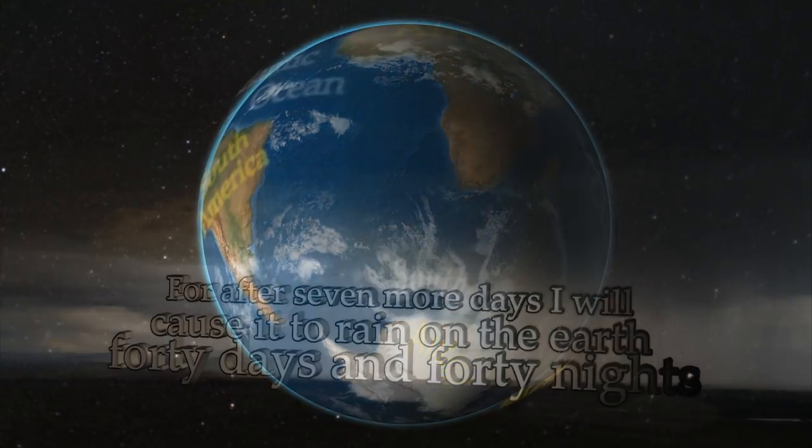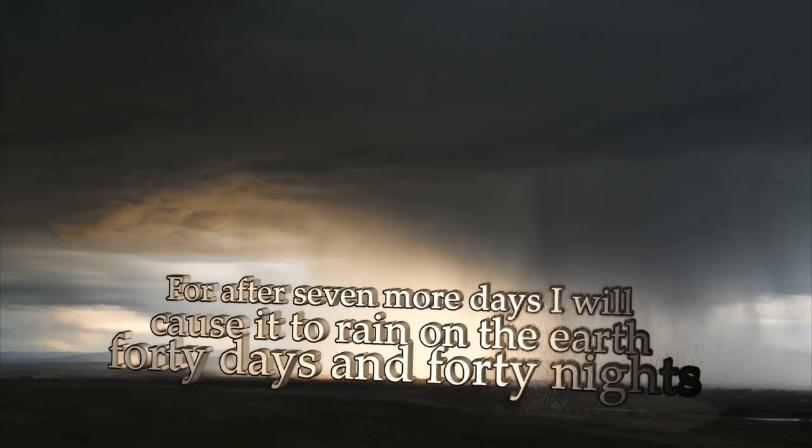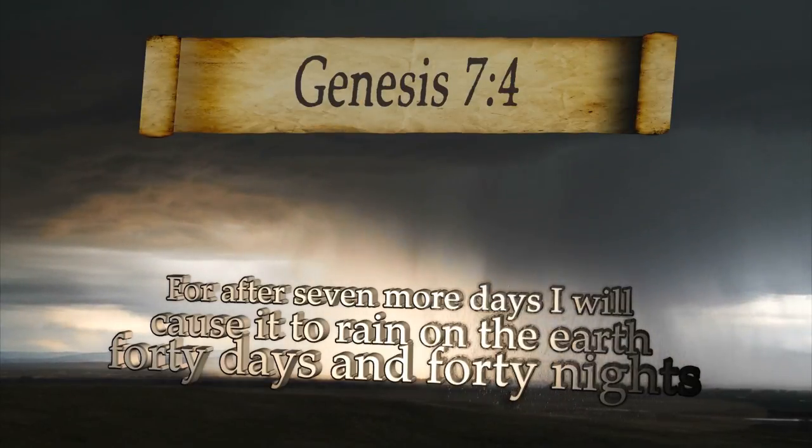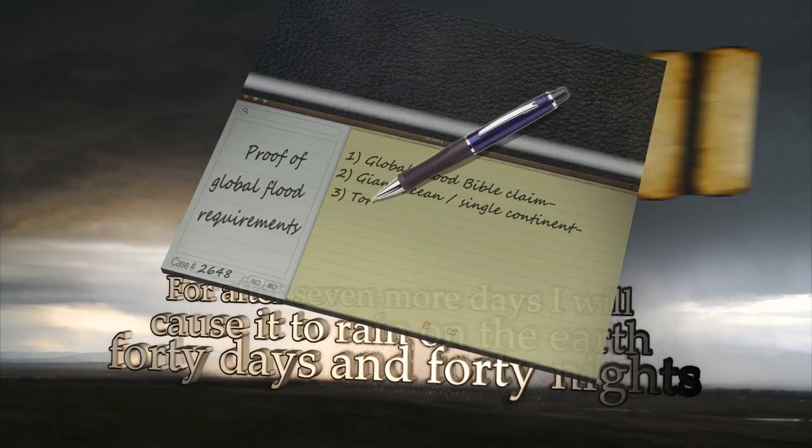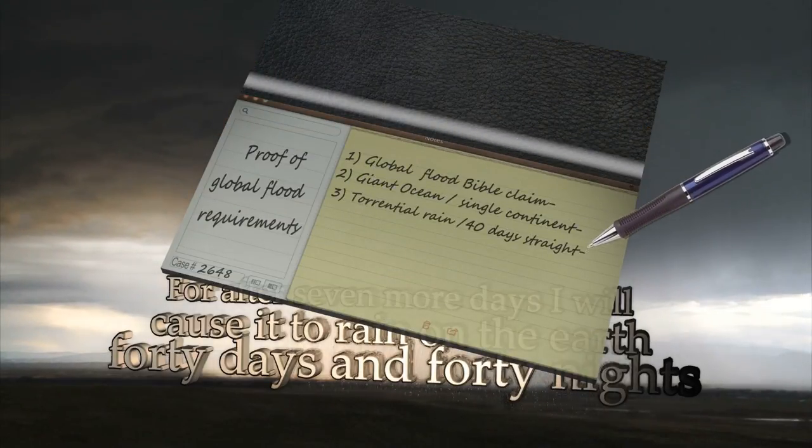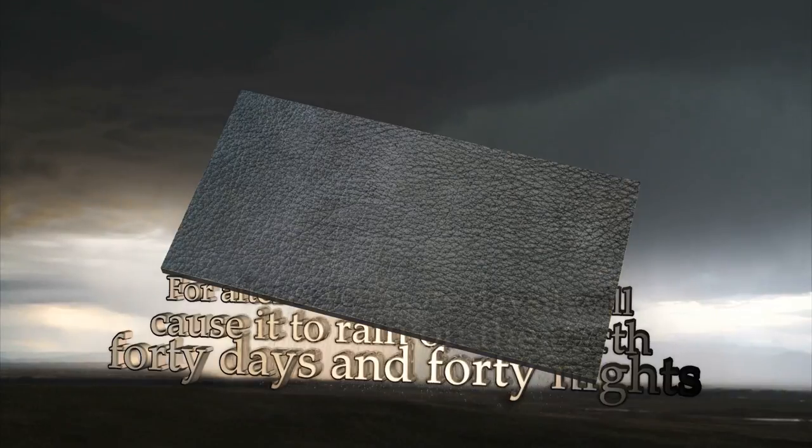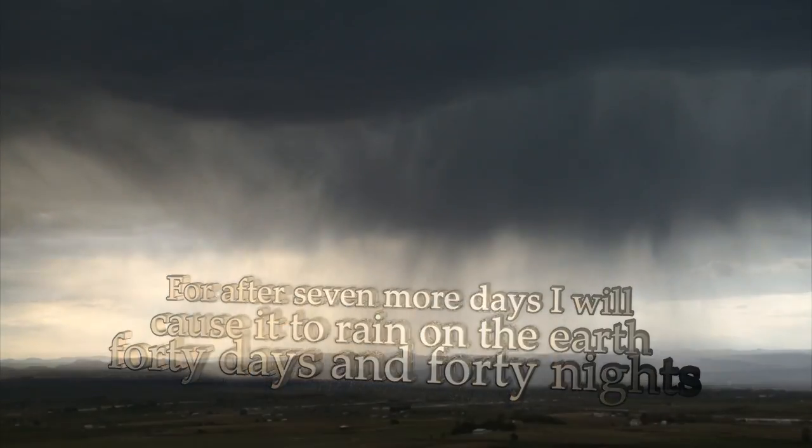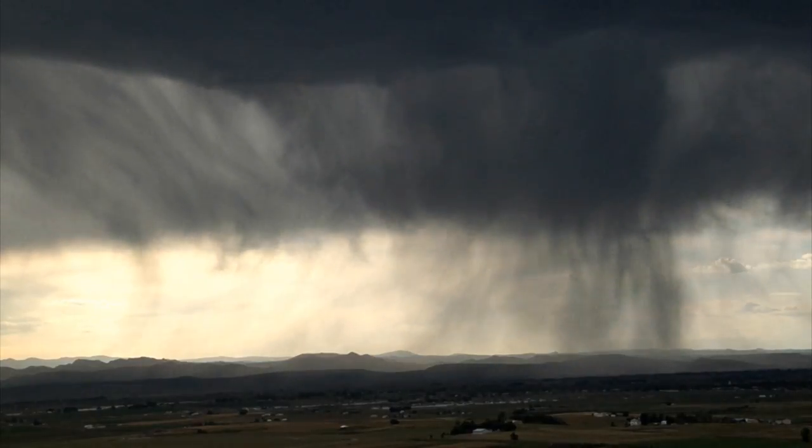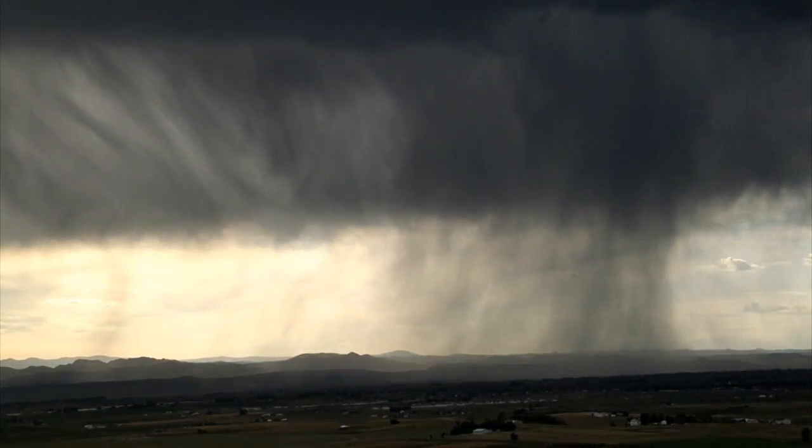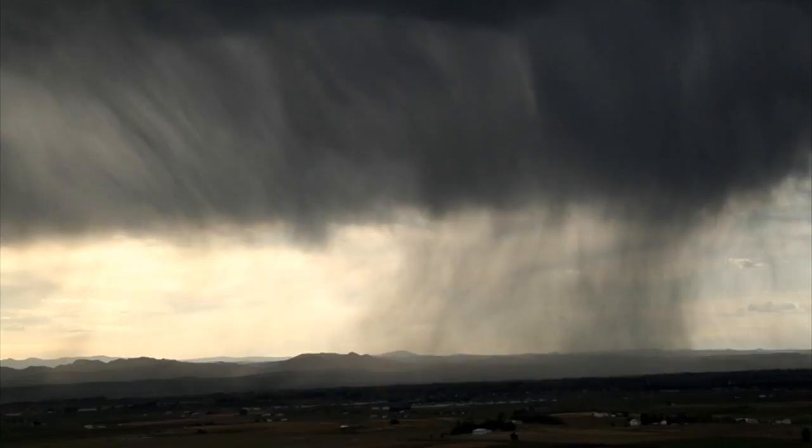In Genesis 7:4, we have the testimony that prior to flooding, great rain came at the forefront of the actual flooding itself. And this lasted for forty days and nights. And verses 6-10 declare that floodwaters came on the Earth distinct from the rain. This is the logical known order of hurricanes and tropical storms that bring tidal waves. The wind and rain come first at the forefront of the generating storm.